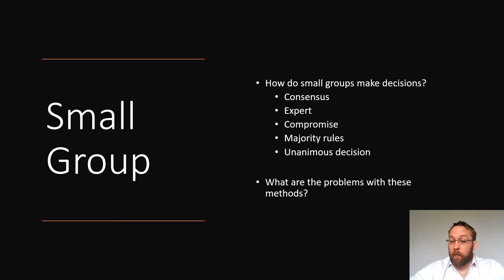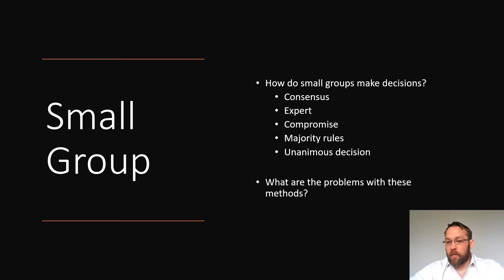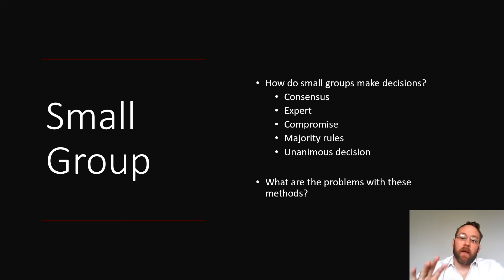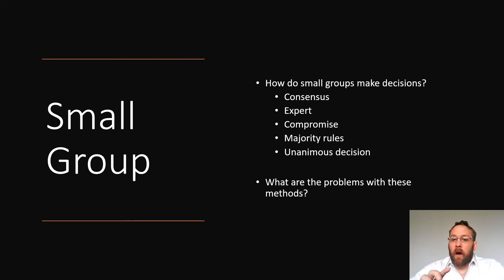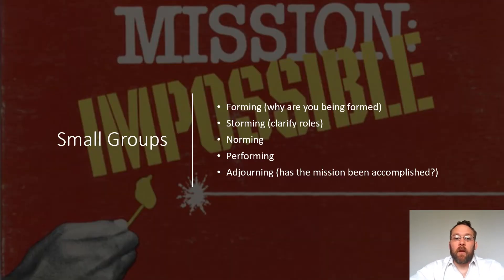Finally, unanimous decision: everybody comes into the room and they're all on the same page almost immediately. We'll talk about the problems with unanimous decision when we get to groupthink in a couple of slides. But the unanimous decision is everyone's on board, everyone agrees, let's vote and get out early. That can be a big problem when it comes to groupthink.